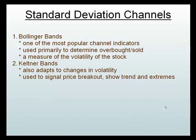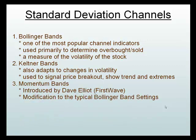Keltner Bands are very similar to Bollinger Bands and are used for single price breakouts. When we pull up the chart you'll see a bit more, but instead of measuring the volatility of the stock, the bands change based upon the stock's volatility. Then we have the Momentum Bands — introduced by Dave Elliott, known as First Wave from wallstreetteachers.com — which is basically a modification on the typical Bollinger Band settings. With Bollinger Bands you want to capture the move inside the bands; with Momentum Bands you want to capture the move outside the bands.